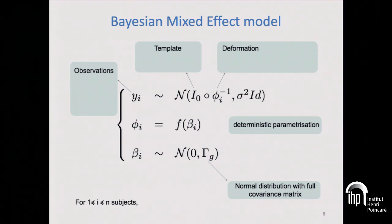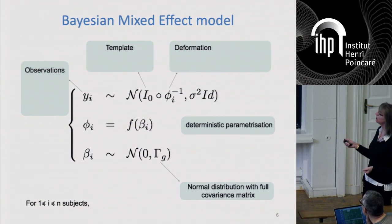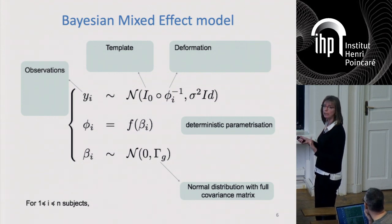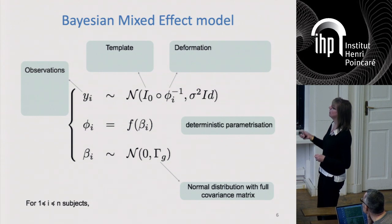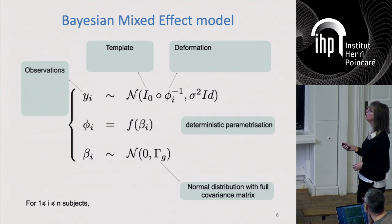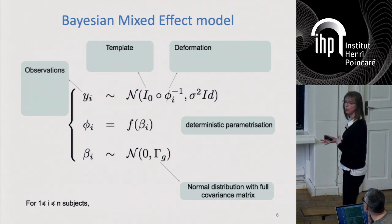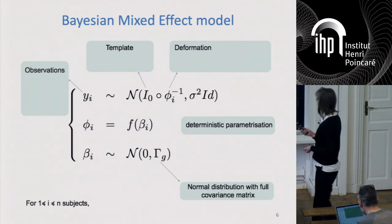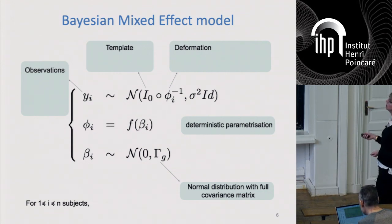My single image observation per subject is, up to noise, something close to my template with a specific deformation. This deformation is parametrized so that we can deal with it with a computer. This geometric parameter has a given probability distribution that we assume to be centered at the mean element, which would be my template. All deformations should average to zero, but with a full covariance matrix which will tell us how things are moving together.